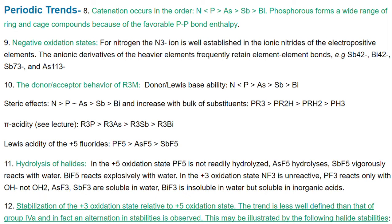The steric effect is greatest for nitrogen and least for bismuth, and nearly equal for phosphorus and arsenic, increasing with bulk of substituents. PR₃ has the greatest steric effect. As hydrogen is substituted, phosphine (PH₃) is least. The pi-acidic nature is also greatest for R₃P and least for bismuth, R₃Bi.